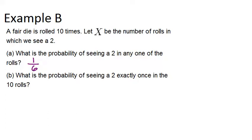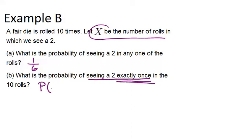Now the next question is different: what is the probability of seeing a 2 exactly once in the 10 rolls? We're looking for the probability that X, the number of rolls we see a 2, equals 1 — exactly one 2. We can use our binomial distribution formula. The probability that X equals 1 equals the number of ways we could get exactly one 2, which is 10C1, multiplied by the probability of getting a 2 and the probability of not getting a 2 for those other 9 times.